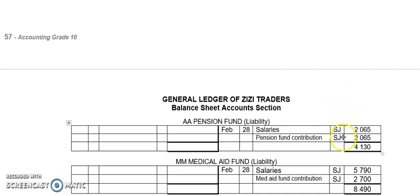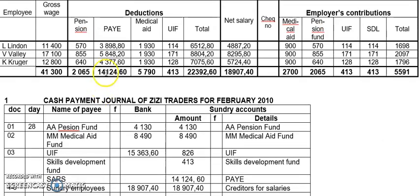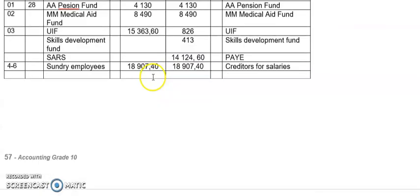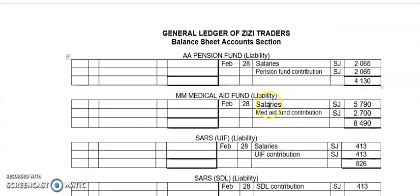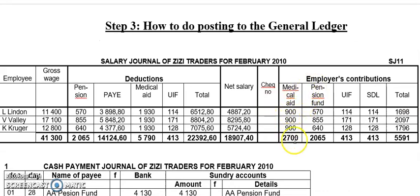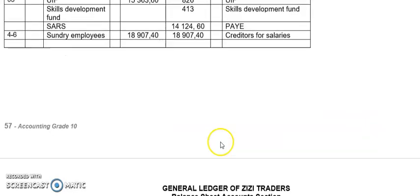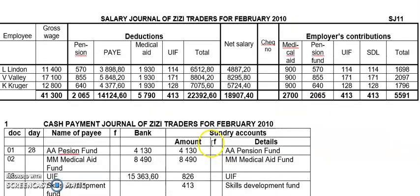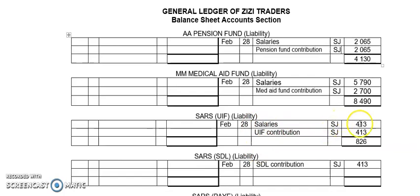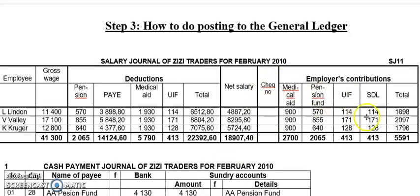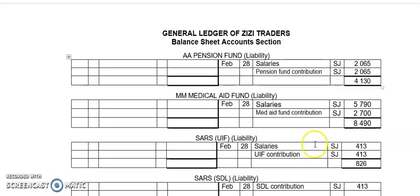The account is not fully completed yet but we're doing step one. Then I go to medical aid fund. I go to deductions — yes, 5790. Salaries 5790. Is there medical aid in contributions? Yes — 2700. Medical aid fund contribution, salaries journal, 2700. Total. Then the next general ledger item is SARS UIF. I go to deductions — SARS UIF 413. Salaries SJ 413. I go to contributions — UIF 413. Write 'UIF contribution SJ 413.' Total.